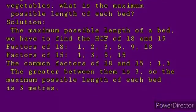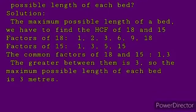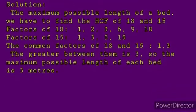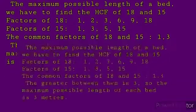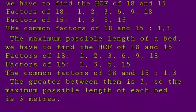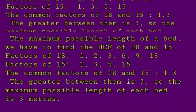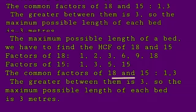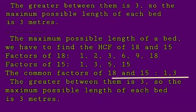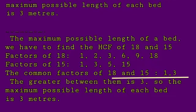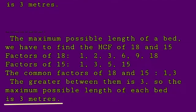So let us write the factors of 18 first. That is 1, 2, 3, 6, 18. Factors of 15: 1, 3, 5, and 15. The common factors of 18 and 15 is 1 and 3. The greater between them is 3. The maximum possible length of each bed is 3 meters.